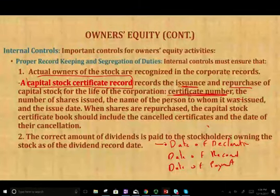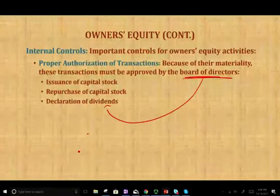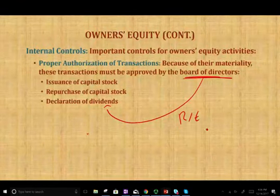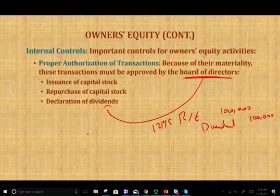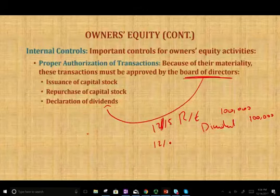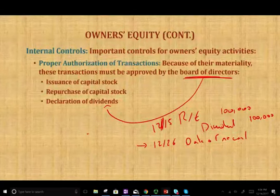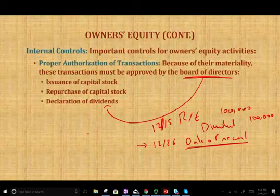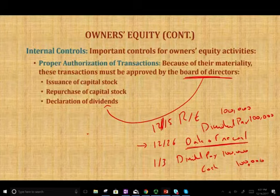On the date of declaration, the board of directors decides to pay dividends. The company debits retained earnings and credits dividend payable — for example, committing to pay $100,000 in dividends. The board also sets the record date; whoever owns the stock on that date will receive the dividend. On the date of payment, the company debits dividend payable $100,000 and credits cash $100,000.